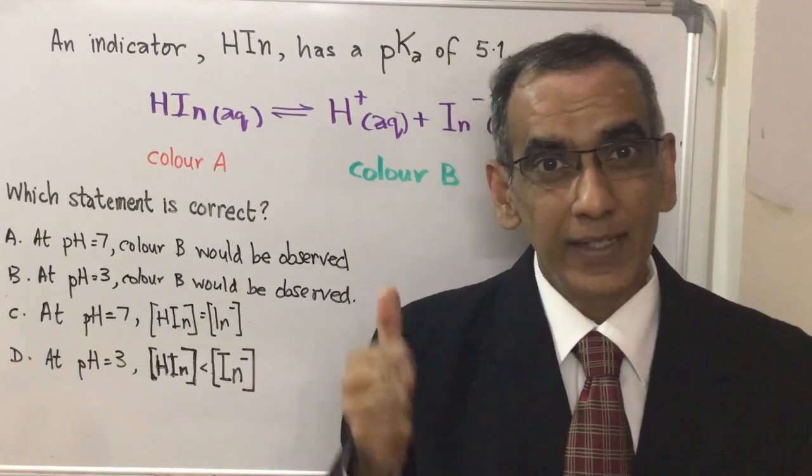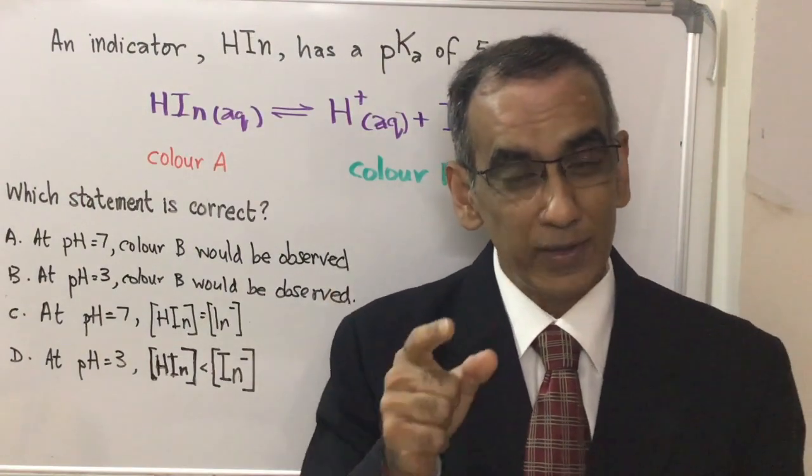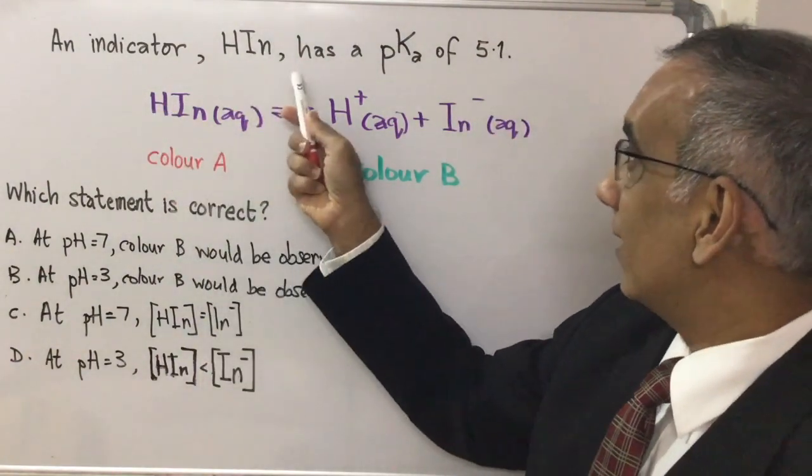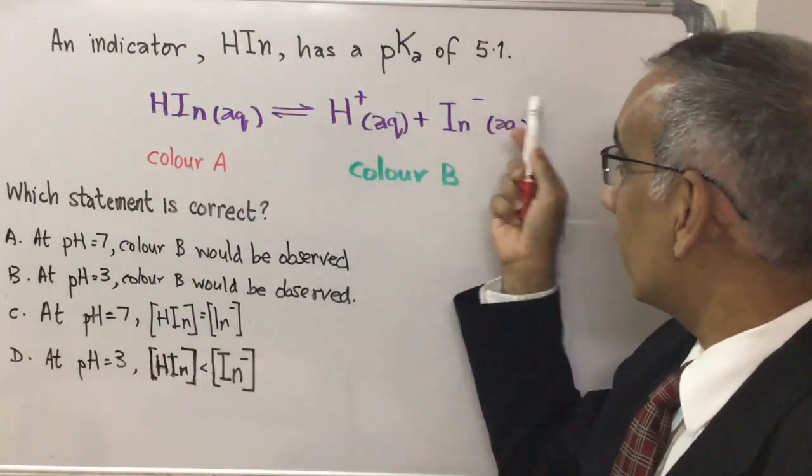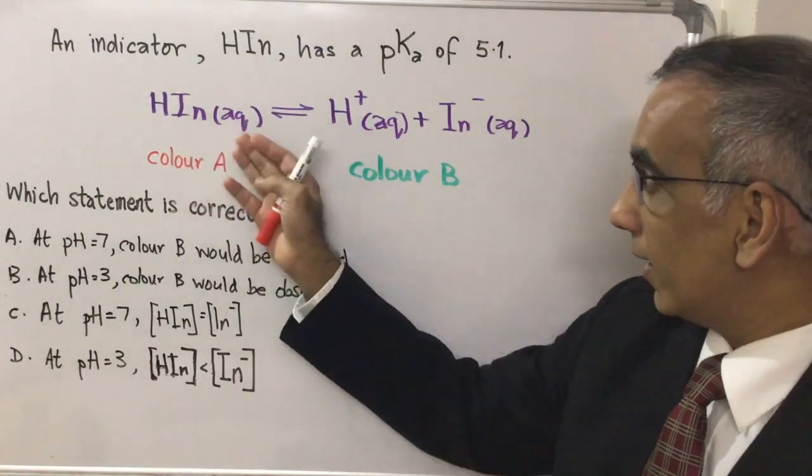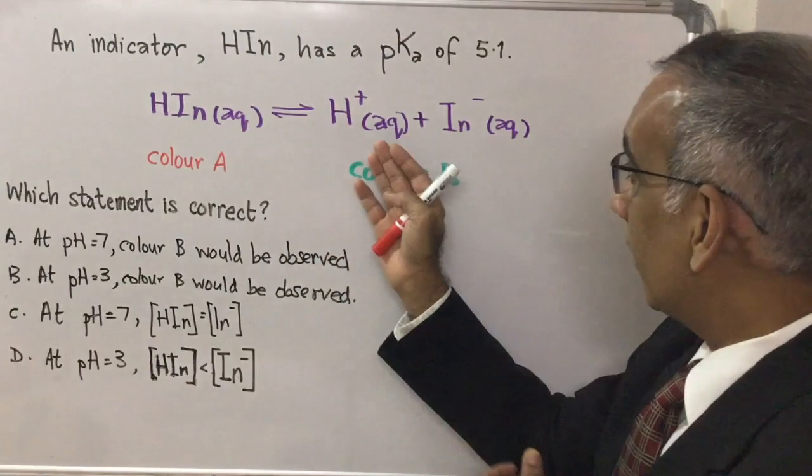Hello and welcome again as we consider yet another multiple choice question for IB chemistry. An indicator HIN has a pKa of 5.1 and here you have this equation HIN in aqueous solution going into an equilibrium with H+ in aqueous solution and IN- in aqueous solution.